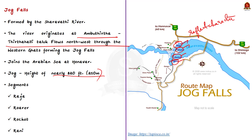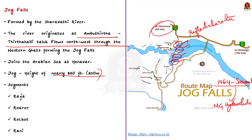Important places near Jog Falls: first, Honnemaradu Island, situated on the backwaters of the Sharavathi River and a famous holiday destination. Second, Linganamakki Dam, famous for water sports, built in 1964 across the Sharavathi River. Located about six kilometers from Jog Falls, the dam forms the reservoir for the Mahatma Gandhi Hydroelectric Power Unit, making Jog Falls a source of cheap electricity generation.